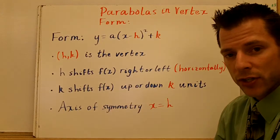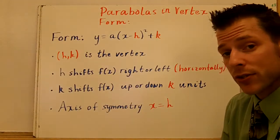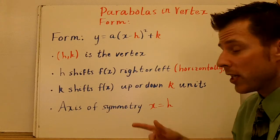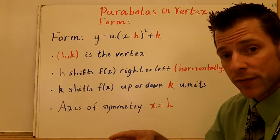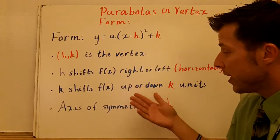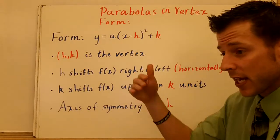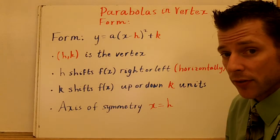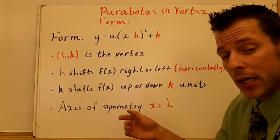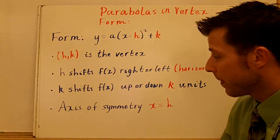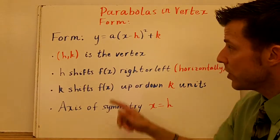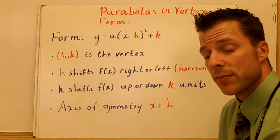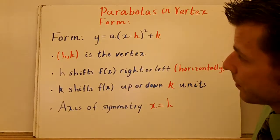H is going to shift your function h units either to the right or to the left, depending on your h value. That shift is horizontal. K is going to shift your function up or down based on how many k units you have. If k is positive, you move up. If k is negative, you move down. The axis of symmetry is great. All you need to know is whatever your h value is, that's the vertical line for the axis of symmetry. Let's look at some examples.